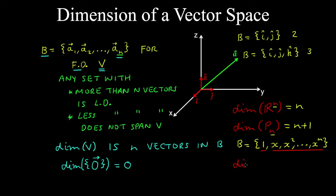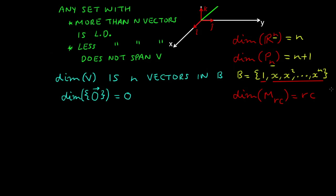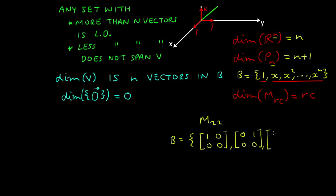Similarly, the dimension of the vector space of matrices with some number of rows and some number of columns is equal to the rows multiplied by the columns. The vector space of 2x2 matrices has a standard basis comprising the 4 matrices that each have a single entry of 1, so this vector space would have a dimension of 4.